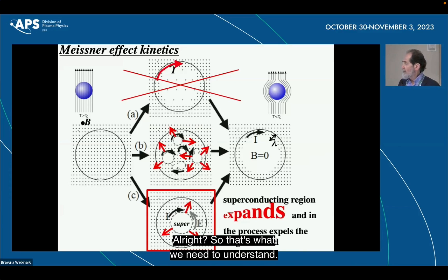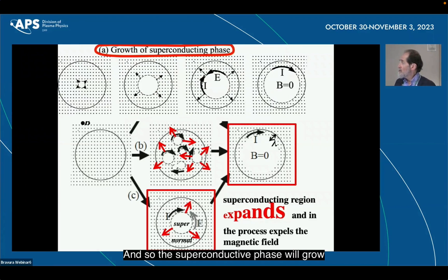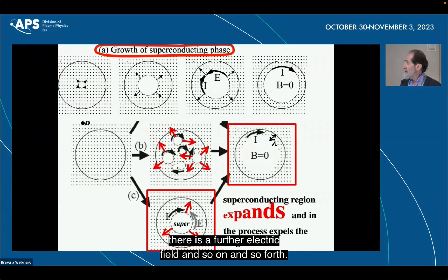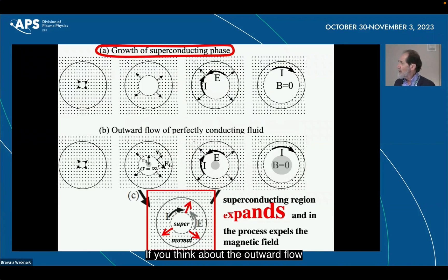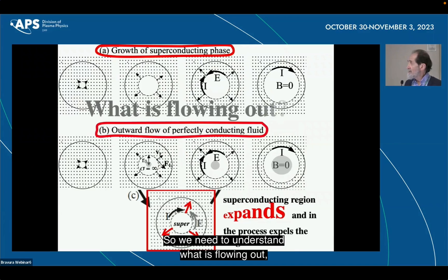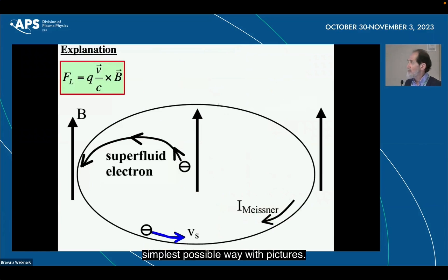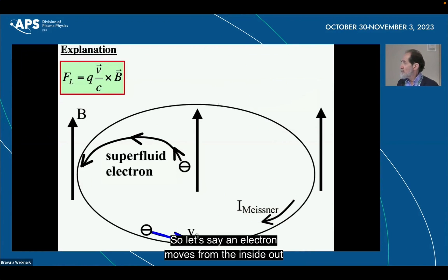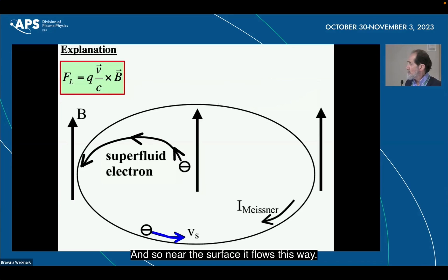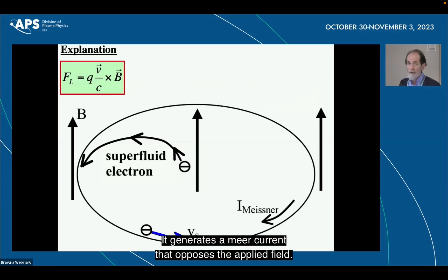All right. So that's what we need to understand. And so the superconducting phase will grow. And as it grows, there is a current, there is a Faraday electric field and so on and so forth. If you think about the outward flow of a perfectly conducting fluid, it would do exactly the same thing. It would just move out and move the magnetic field lines out if it's perfectly conducting. So we need to understand what is flowing out. And I'm going to explain it in the simplest possible way with pictures. So Lorentz force is all we need. So let's say an electron moves from the inside out. And then from the just a Lorentz force, it will bend this way. And so near the surface, it flows this way. It generates a Meissner current that opposes the applied field. Very simple.